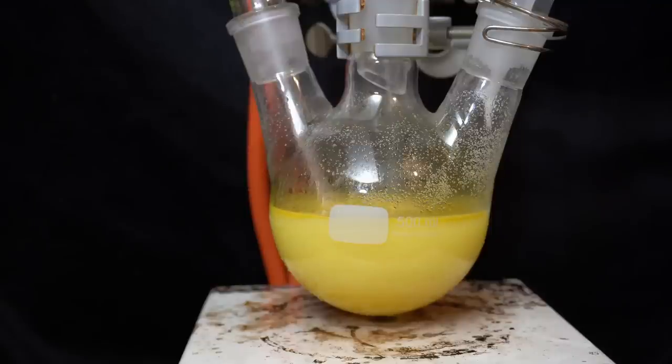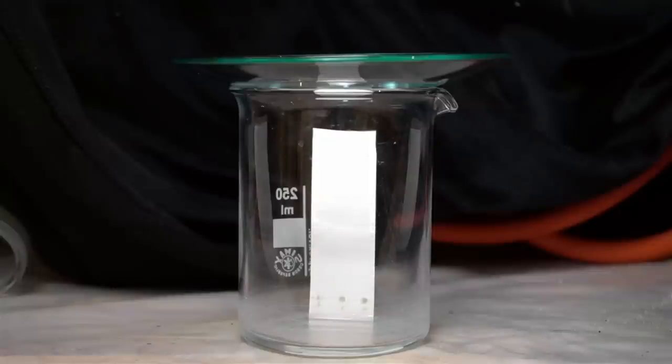After all the methyl iodide has been added, the mixture is allowed to stir overnight. The next day we can check up on the reaction progress by performing a TLC. On the left is a reference for aniline and on the right is our reaction mixture. Under UV light we can see four distinct spots from the reaction mix.